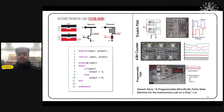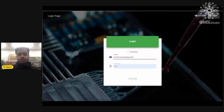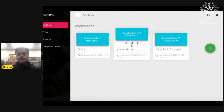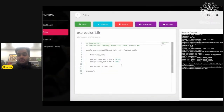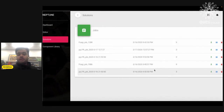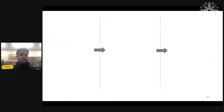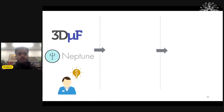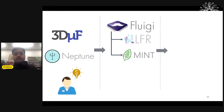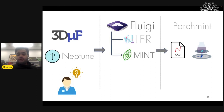With this entire ecosystem — the design language, compilers, and the manufacturing library in 3DUF — I created another tool called Neptune: a cloud-based IDE so that microfluidics engineers or biologists who aren't super tech-savvy can quickly create a description in LFR and compile the final design outputs. So now if you have an idea for a microfluidic device, you can use one of my design tools — Neptune or 3DUF — and that in turn uses different languages and algorithms to generate the final designs and CAD files needed for manufacturing.